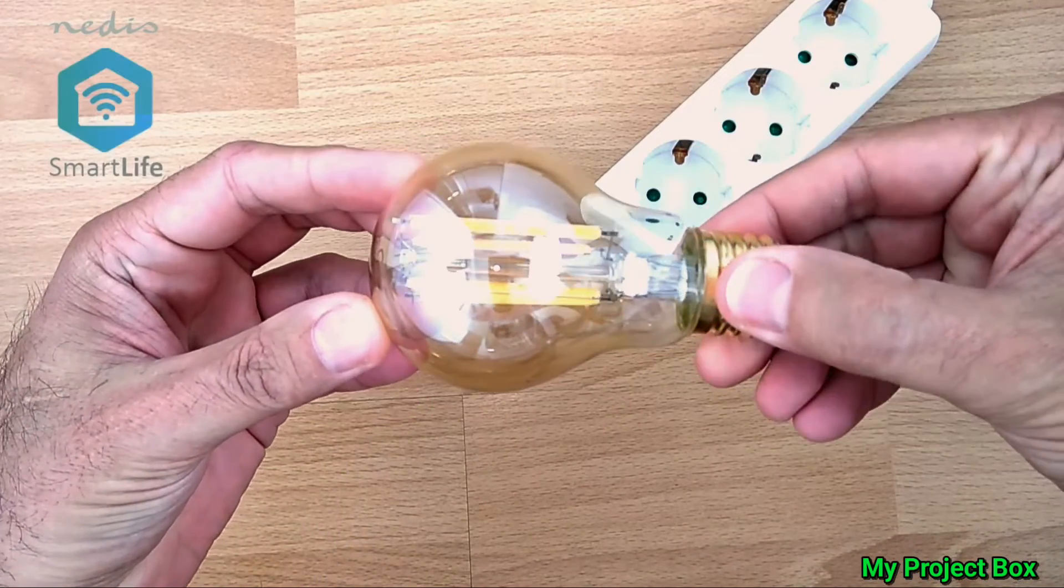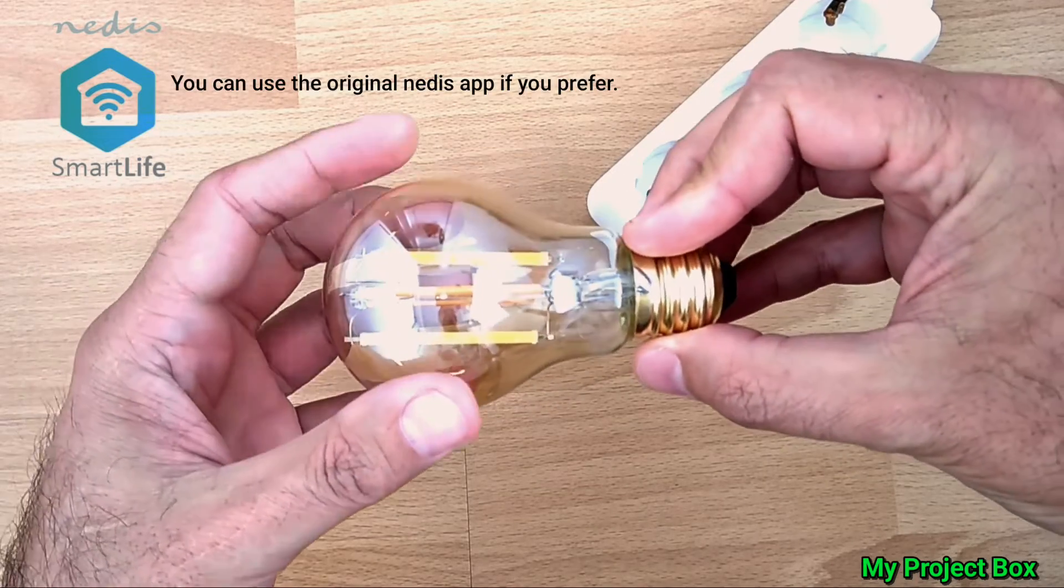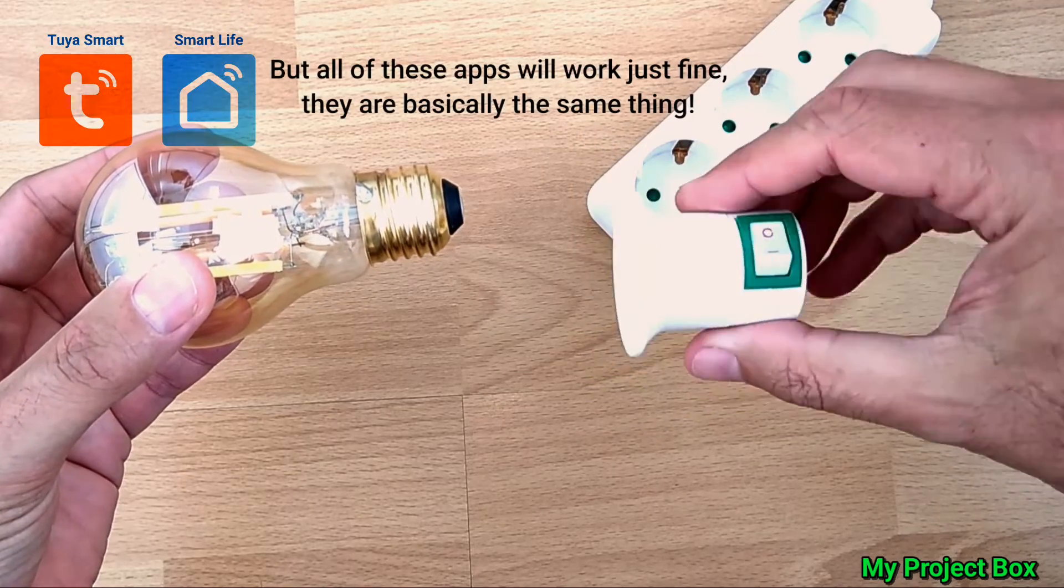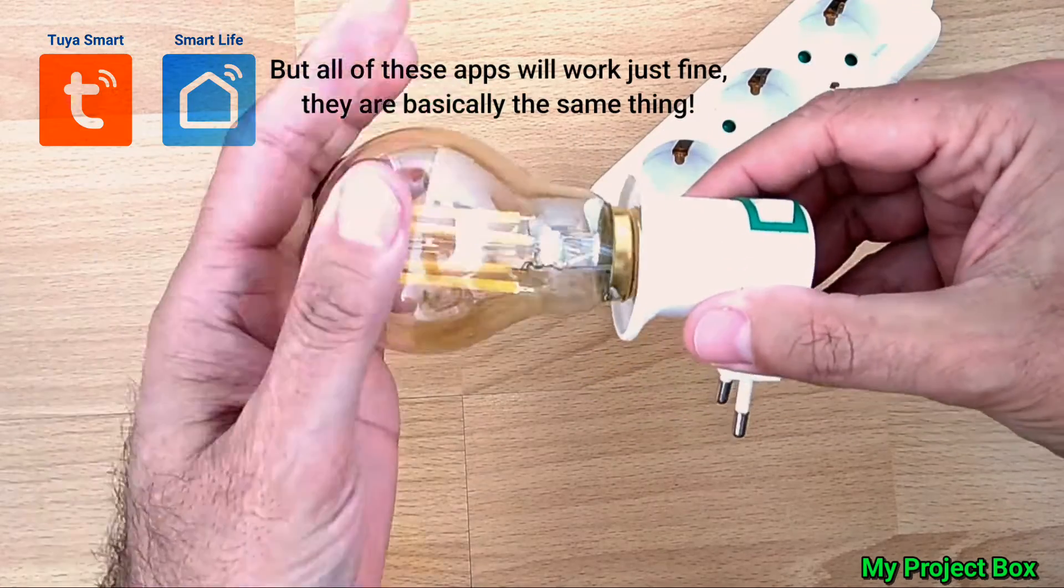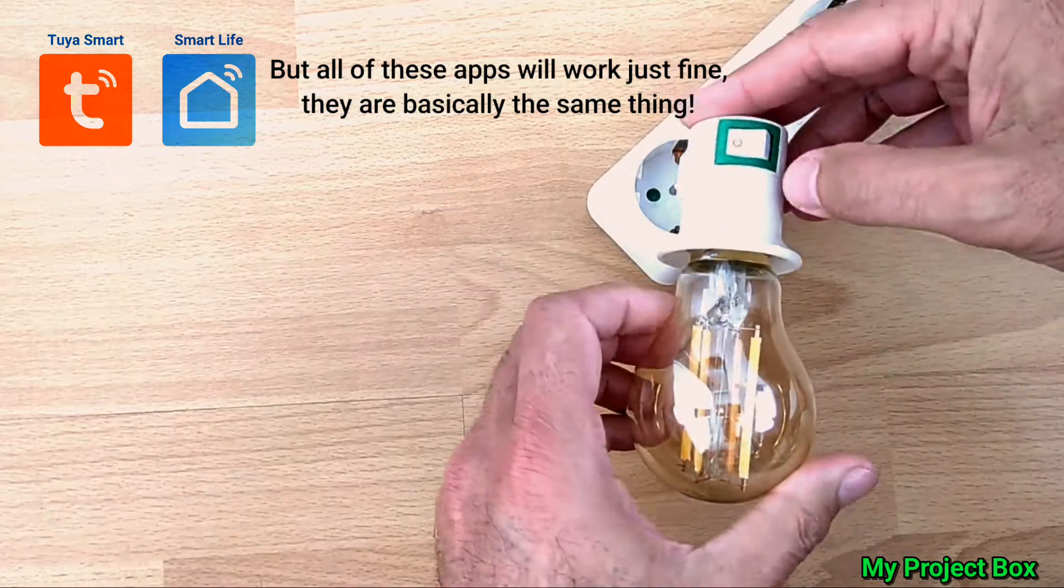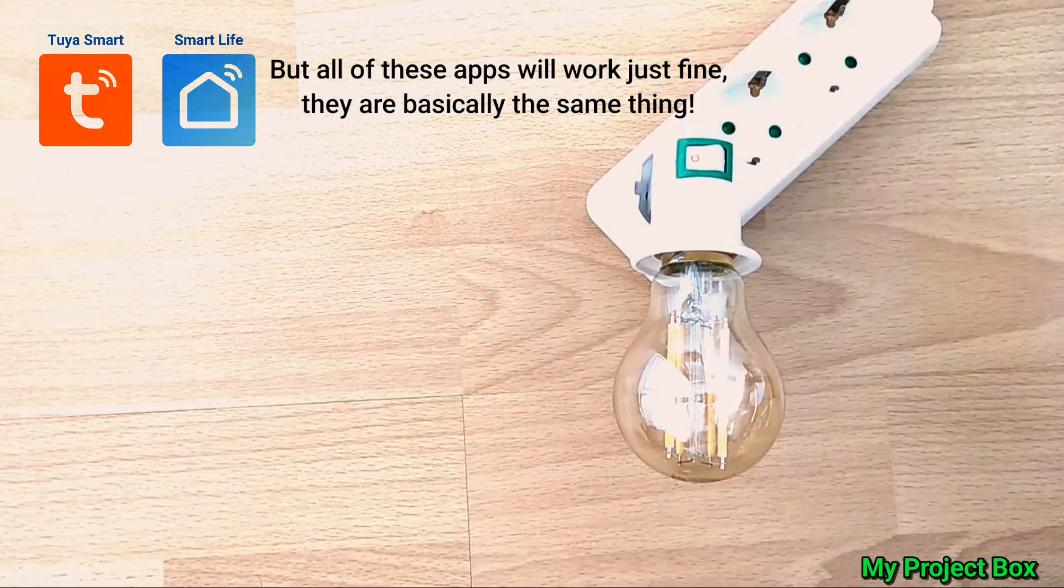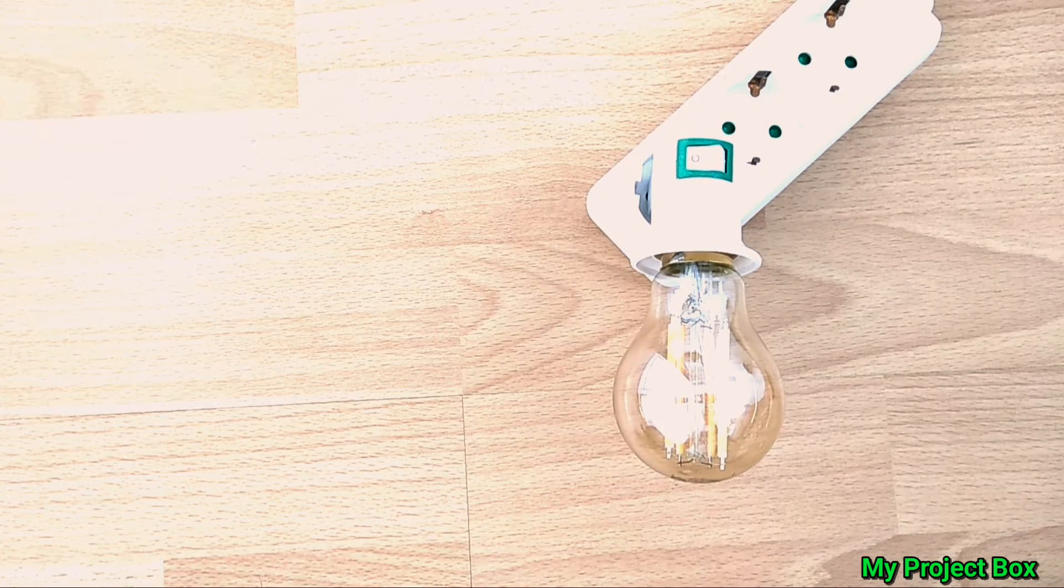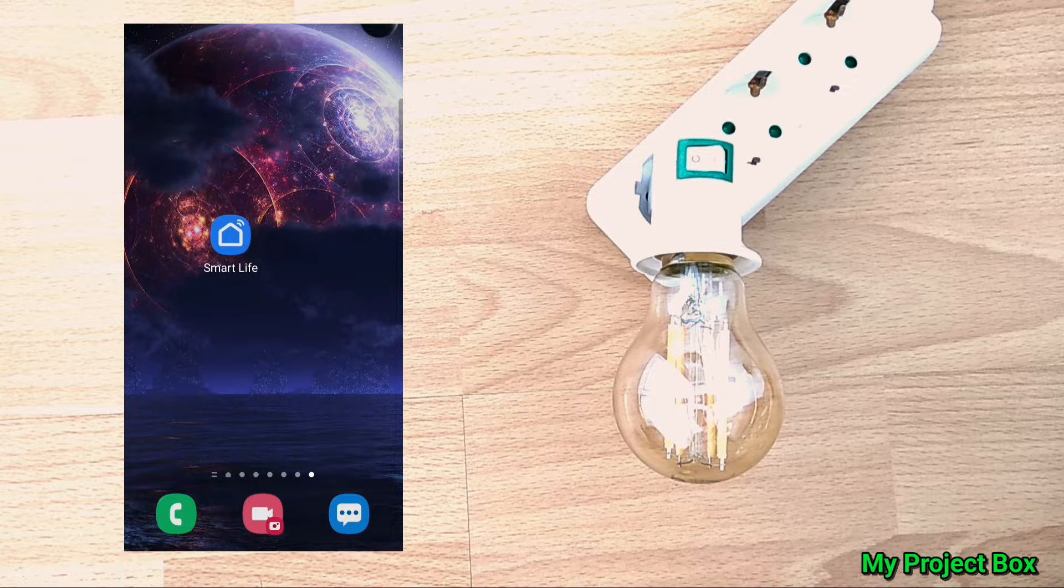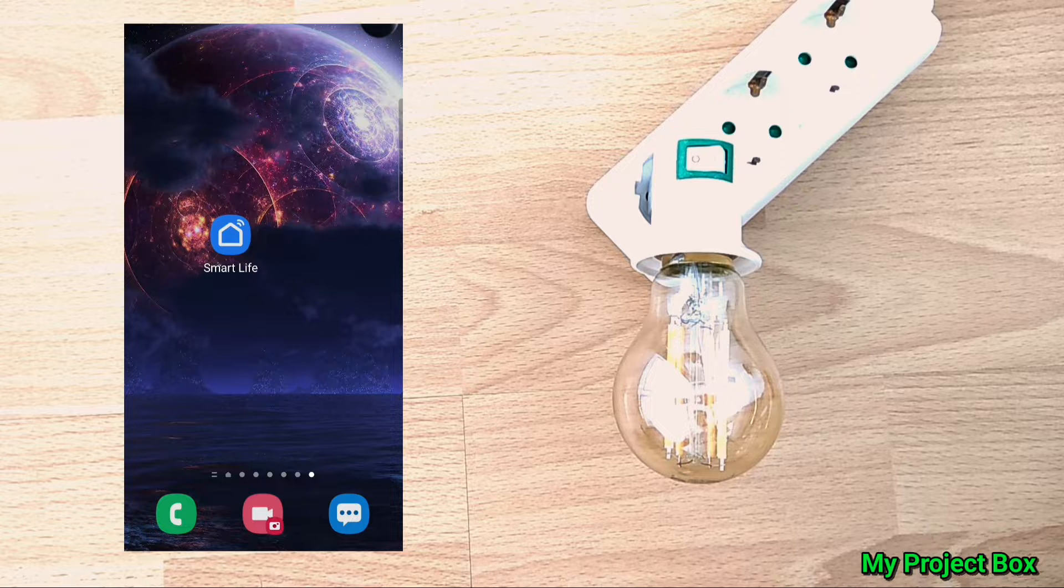So let's see if we can connect this bulb to the Wi-Fi network. I've got my little trusty socket base with the switch in it, so we'll put our Wi-Fi filament bulb straight in there so it can neatly fit into our Euro socket. And then we'll run the Smart Life app after you've installed it and created an account.